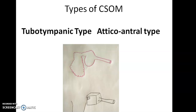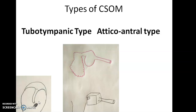Types of CSOM — there are two types: tubotympanic type and atticoantral type. The tubotympanic type involves the Eustachian tube and tympanic cavity. It will easily drain because it is in a dependent portion of the tympanic cavity, near the floor. It will not result in many complications. The perforation is usually small and central, and it drains easily. Therefore, it is called the benign or safe type of CSOM.